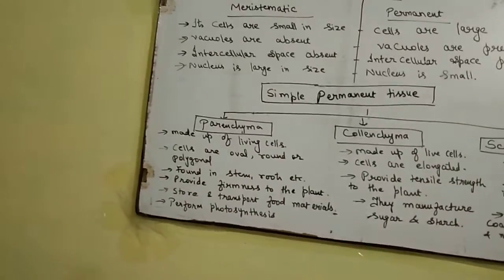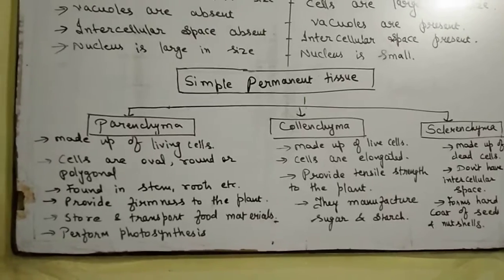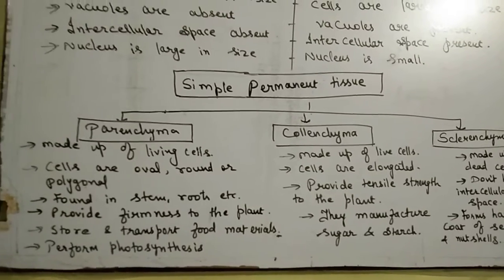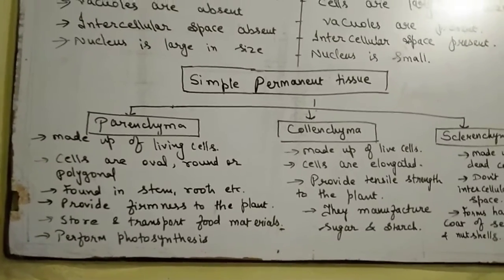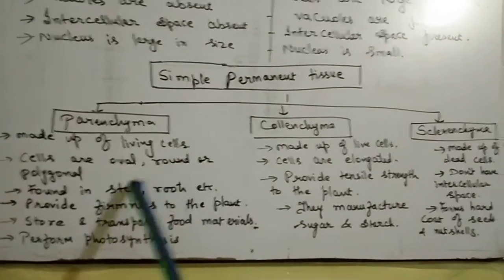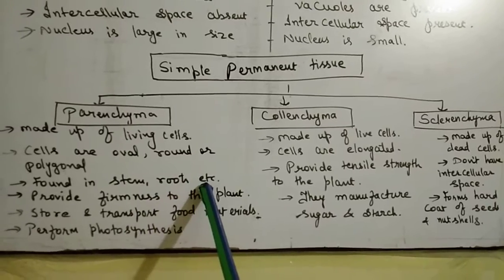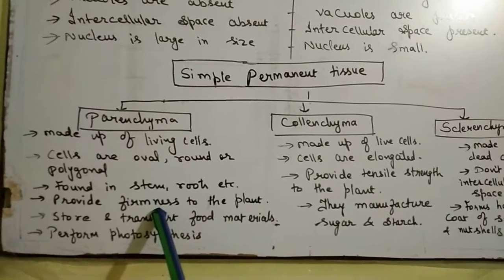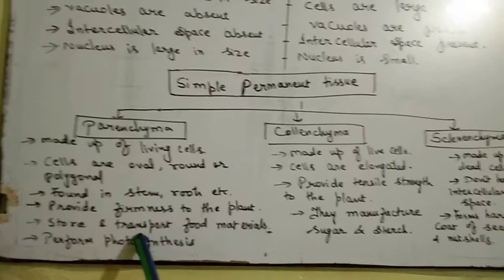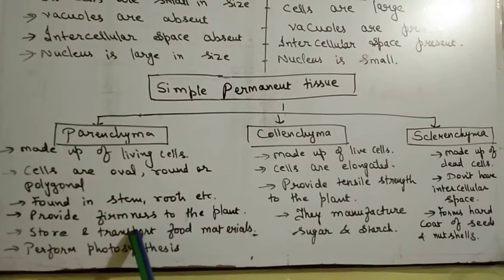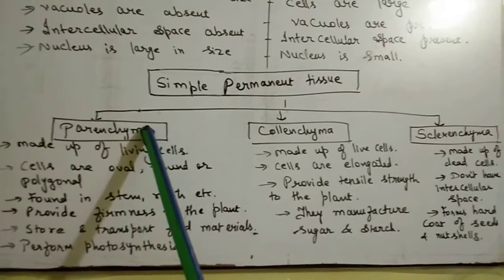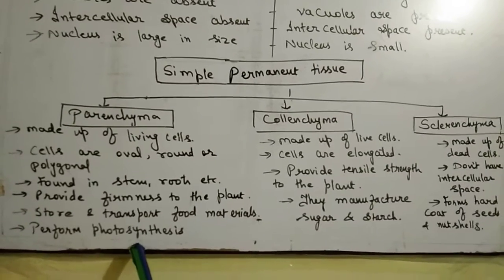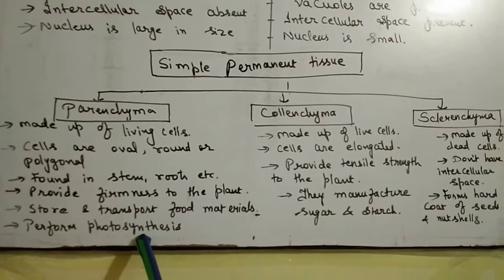Parenchyma is made up of living cells and has intercellular spaces between them. The cells are of any shape — oval, round, or polygonal. Parenchyma is found in stems, roots, fruits, flowers, etc. Its functions are: it provides firmness to the plant, it stores and transports food materials, and it also takes part in photosynthesis.